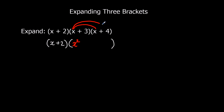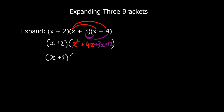Then x times 4 is 4x. Then moving to the second term in the second bracket: 3 times x is 3x, and the second one times the second one: 3 fours are 12. Collecting the like terms in the bracket: we've got x squared, 4x and 3x which gives 7x, and 12 on the end.